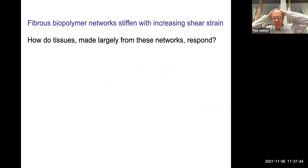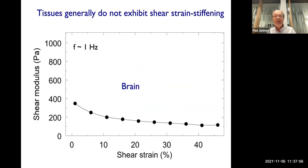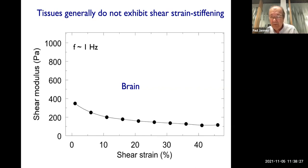So if it's the fibrous nature that's important, how well do these things we've learned from the polymer physics of biopolymers describe tissue rheology? It turns out really terribly. If you take a tissue like the brain and measure its shear modulus as a function of shear strain, it does not get stiffer at high strains than at low strains. If anything, it gets slightly softer. So we're not getting this effect that we expected at all.